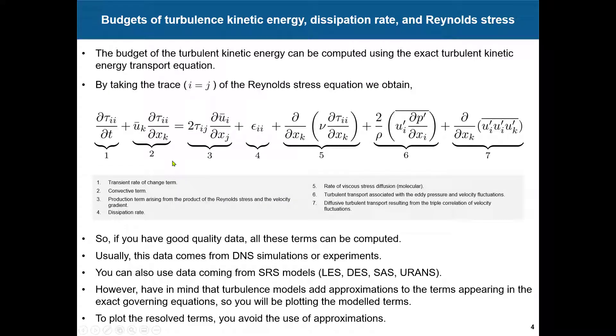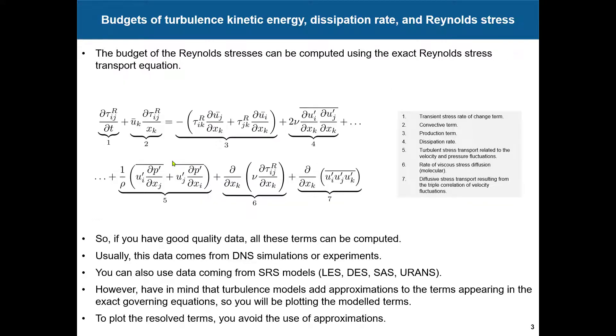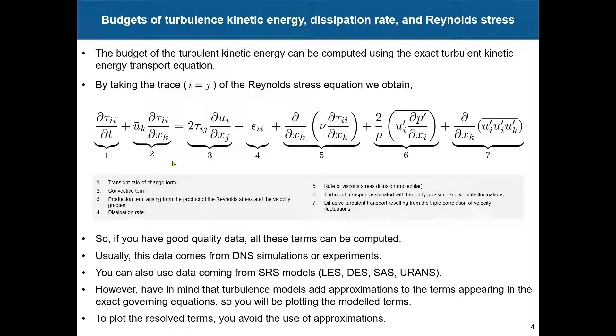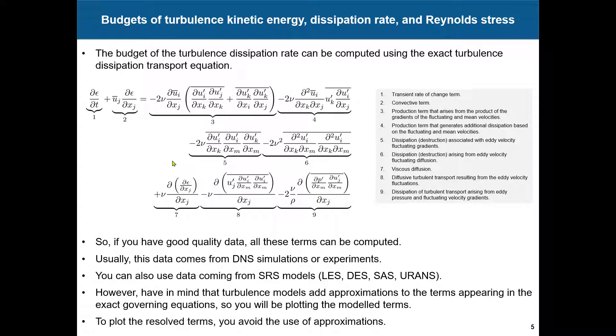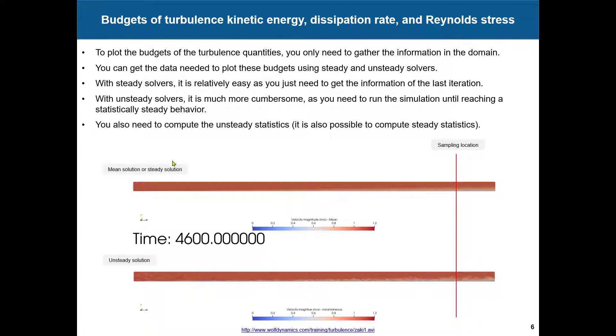Also, you can do it for the turbulent kinetic energy. So remember, you take the trace of this one, and then you have turbulent kinetic energy. And then for the dissipation equation, which is probably, I think, is the most complicated one. So you have all these terms and you can compute this budget. So again, just to remind you, this is putting a line or probes, and along these probes or line, you need to gather the information.